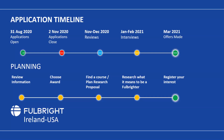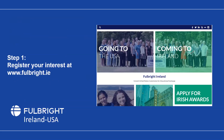In terms of planning, you're on the right track watching our webinar today. You'll also need to review information on our website, choose your award category, find a course if applying for a taught programme or plan your research proposal, and research what it means to be a Fulbrighter — that understanding of the ethos is key. Register your interest on our website if you haven't already. That's the first port of call to receive the comprehensive Irish Fulbright guidelines and the online application link, and it means you'll be in touch with our awards manager.